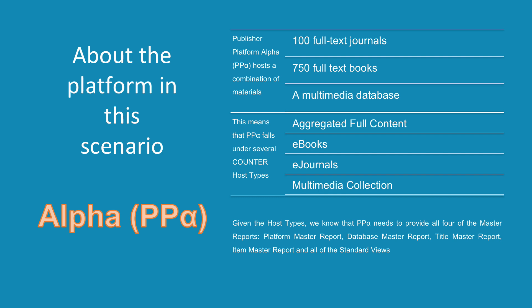Alpha hosts a combination of materials: 100 full-text journals, 750 full-text books, and a multimedia database. This means that Alpha falls under several counter host types: aggregated full content, e-books, e-journals, and multimedia collection.